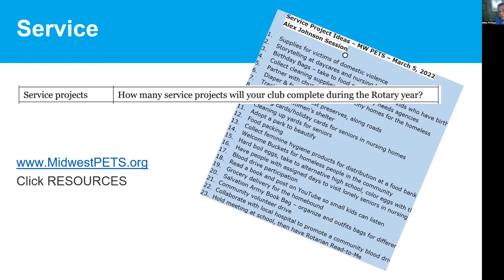Service goals: in the membership area there was a goal about how many members are engaged in service projects; this one is about the service projects themselves — how many service projects did your club complete. On the pets.org website, if you click on resources, you'll find a list of different service project ideas — some very simple and quick, some more involved. This one's pretty straightforward — it's just a service project count.